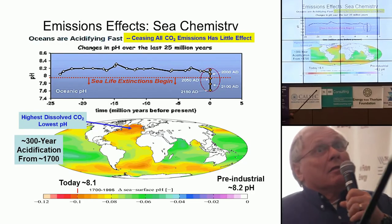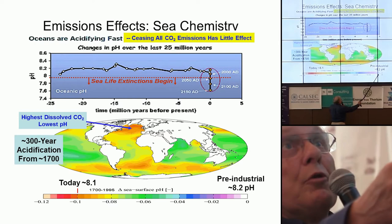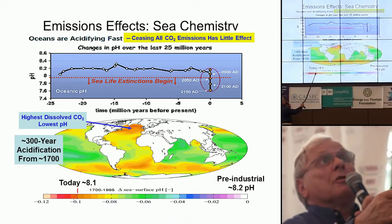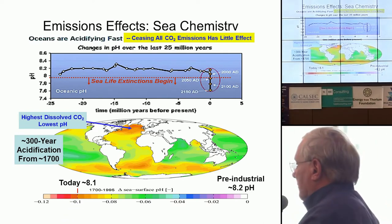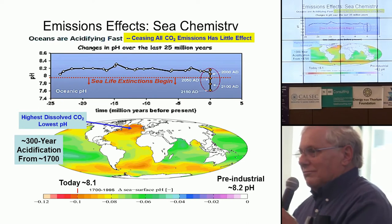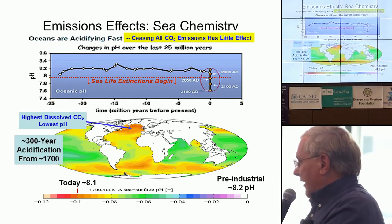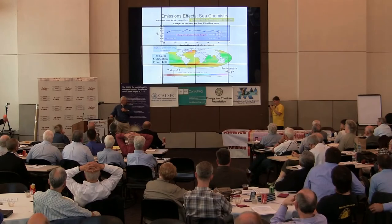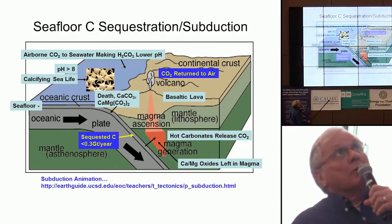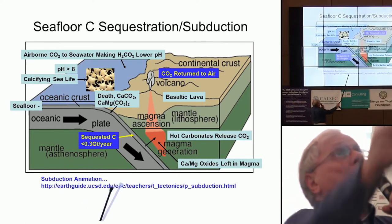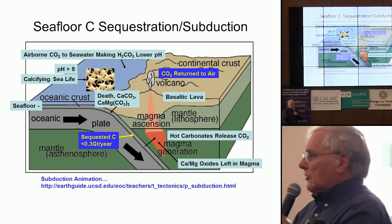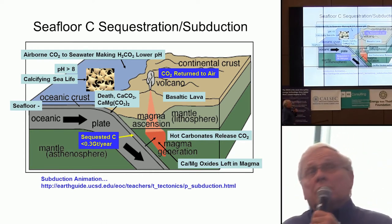Pre-industrial ocean pH was 8.2, and we've brought it down to 8.1 on average in just 150 to 200 years — that's the entire average ocean pH of a planet. Pretty impressive achievement for one species in only 150 years. To correct things, we're going to take the natural cycle that does carbonate sequestration to the sea floor via life forms, and we're going to reverse it.